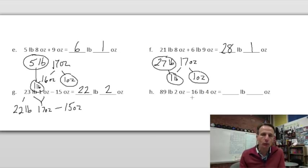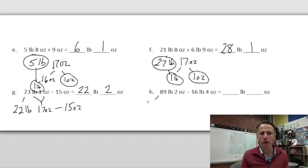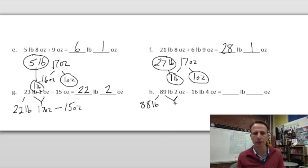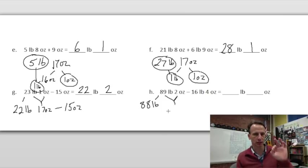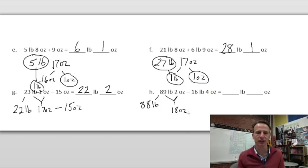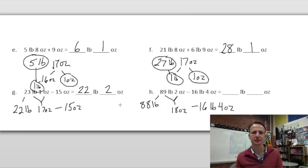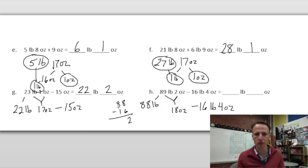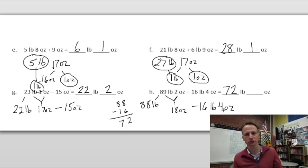Problem 1h: 89 pounds two ounces minus 16 pounds four ounces. We can't do two minus four in ounces, so leave 88 pounds alone and decompose the 89th pound as 16 ounces plus the two ounces — 18 ounces total. Then 88 minus 16 is 72 pounds, and 18 minus 4 is 14 ounces. Answer: 72 pounds 14 ounces.